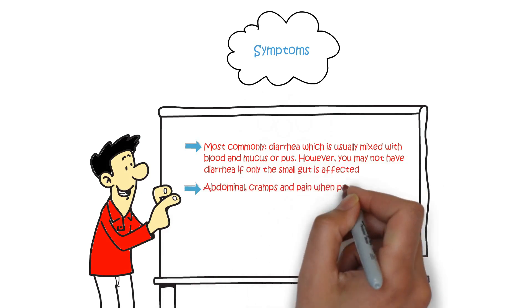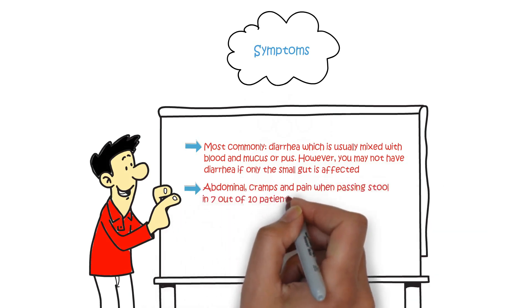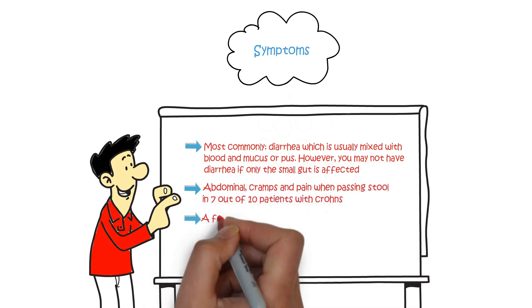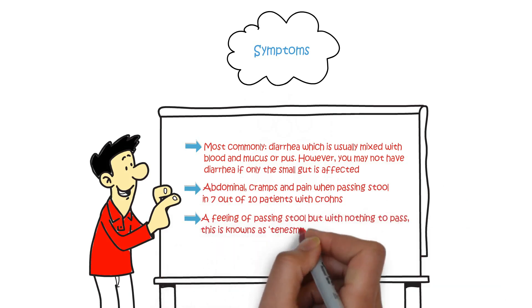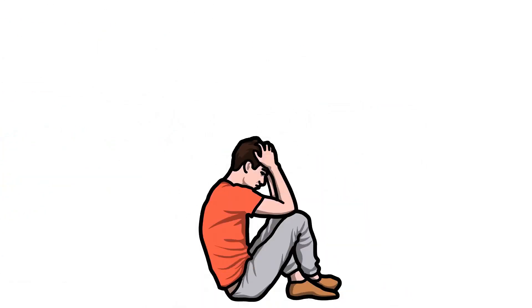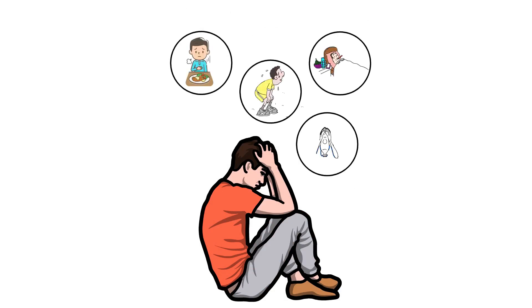Abdominal cramps and pain when passing stool in 7 out of 10 patients with Crohn's. A feeling of passing stool but with nothing to pass, this is known as tenesmus. Mouth ulcers are also common. People generally feel unwell during a flare-up. It is common to also experience fatigue, fever, and loss of appetite, feeling sick, and weight loss.